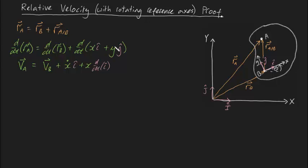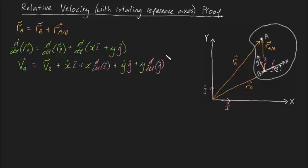Applying the chain rule to xi + yj gives us: x-dot times i plus x times d/dt of i, plus y-dot times j plus y times d/dt of j. So interestingly, in order to solve this problem, we need to find out the derivatives of the unit vectors.